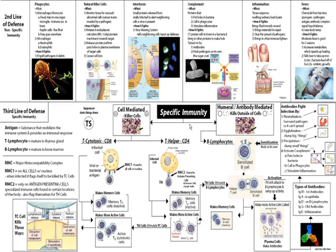For the TC cell, it basically finds an infected cell. That infected cell has taken a little piece of whatever pathogen infected it, placed it in the MHC1 protein, and displayed it on the outside surface. The TC cell comes along and recognizes that as the pathogen it's looking for, and at that point the TC cell is called activated.